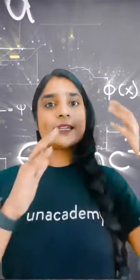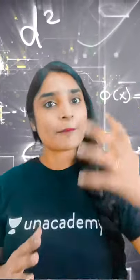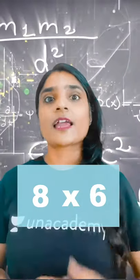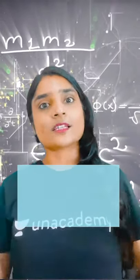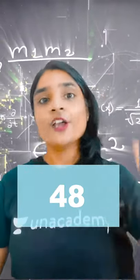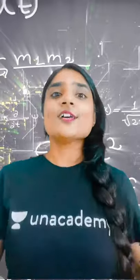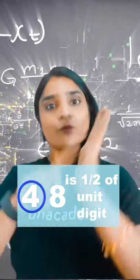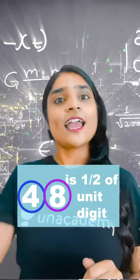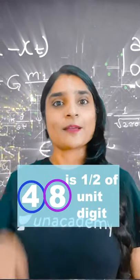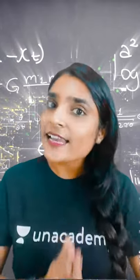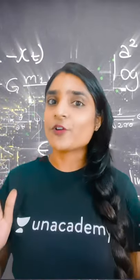Now let's take an example of a single-digit even number. Let's take 8. If you multiply 8 by 6, you will get 48. In this case, the tens place is half of the units place — that is, 4 is half of 8. This is fulfilled for all even numbers.